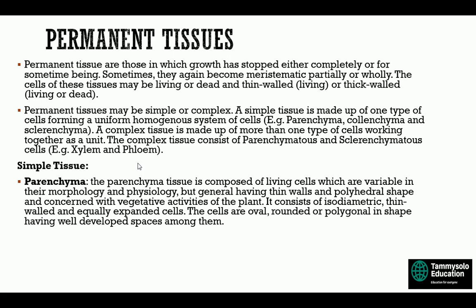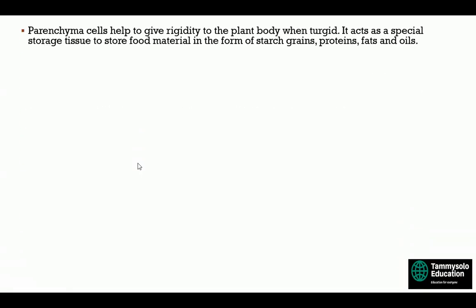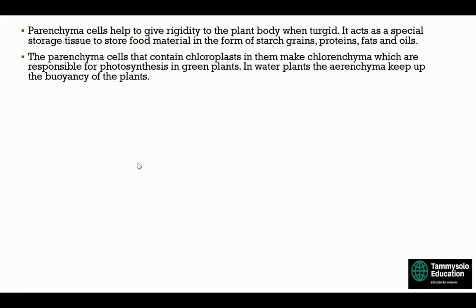Parenchyma tissue is composed of living cells which are variable in their morphology and physiology. The parenchyma of one area is different from another area, but they generally have thin walls and polyhedral shape, concerned with vegetative activities of the plant. They consist of isodiametric, thin-walled, equally expanded cells — oval, rounded, or polygonal in shape — with well-developed intercellular spaces. Parenchyma makes up large parts of various organs: pith, mesophyll of leaves, pulp of fruits, endosperm of seeds, and cortex of roots. Parenchyma cells also occur in xylem and phloem, help give rigidity to the plant body, and act as a special storage tissue for starch grains, proteins, fats, and oils.